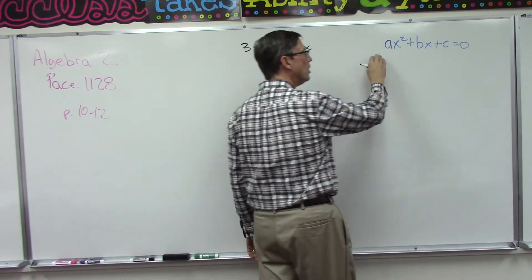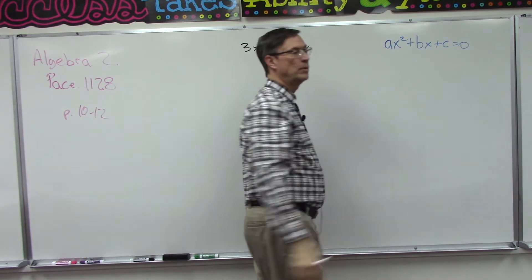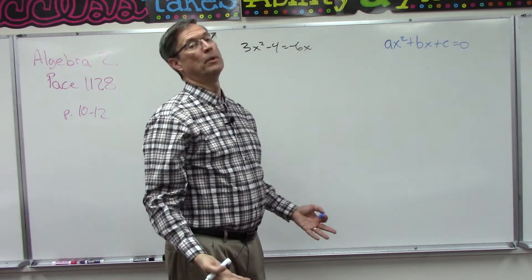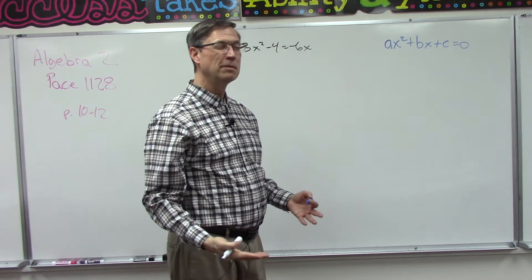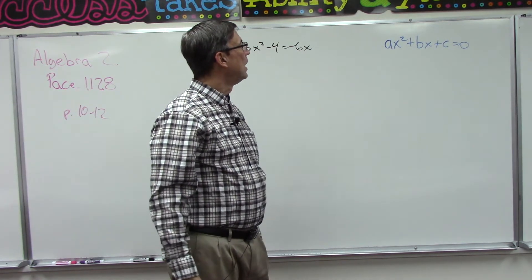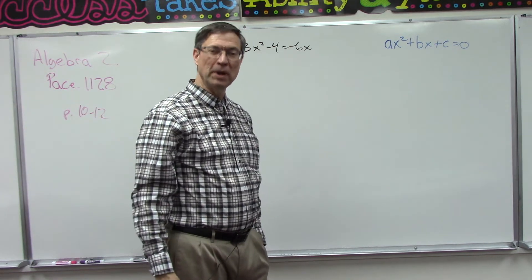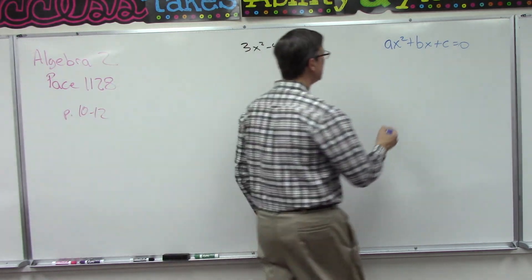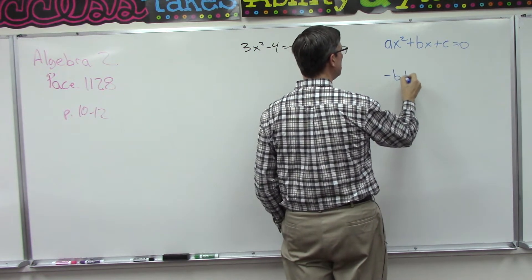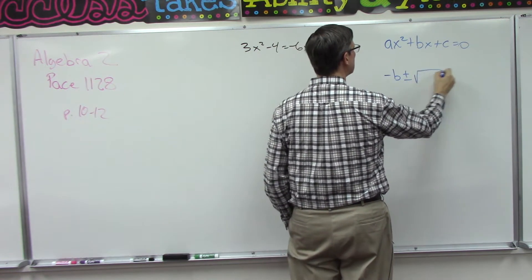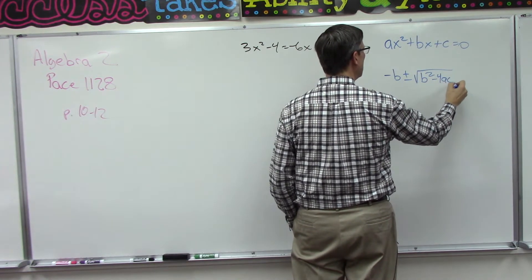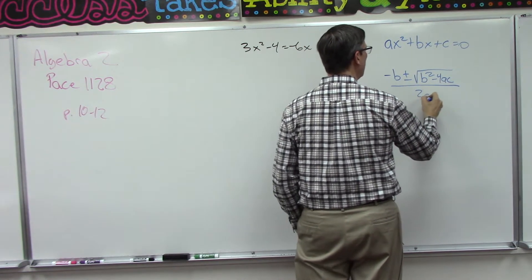So if you start with this as your quadratic equation, and then you solve it just keeping all variables, it's a little bit confusing, but I think if you follow it, it might make sense. But we end up with a formula, which is negative b plus or minus the square root of b squared minus 4ac all over 2a.